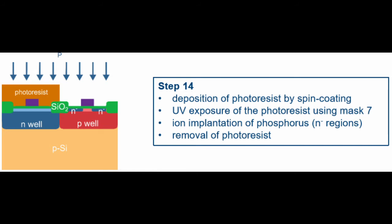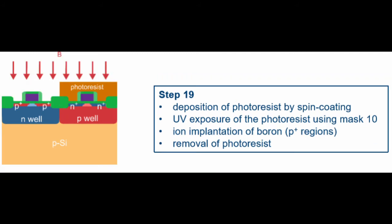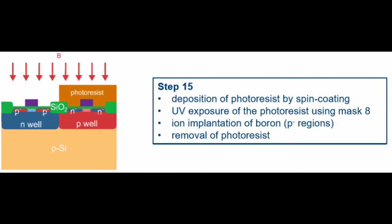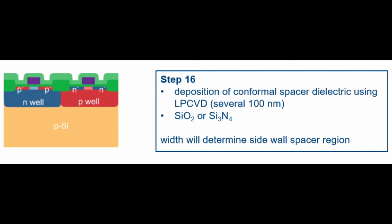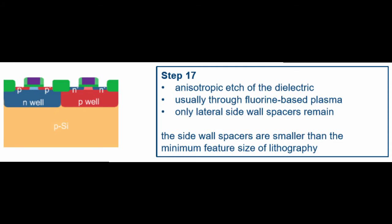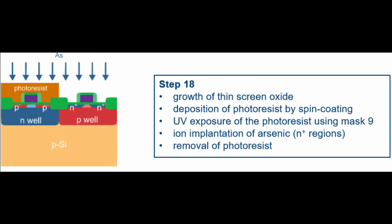To form the extensions or tips, ion implantation of phosphorus occurs — ion implantation of an N-type dopant — and a P-type dopant is also performed to form, as you can see, the tips on the wells. Then, by LPCVD, silicon dioxide or silicon nitride is placed on top of the whole layer, and this is etched anisotropically with a fluorine-based plasma so that only the sides of the dielectric remain as sidewall spacers.